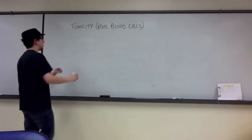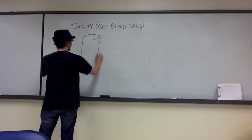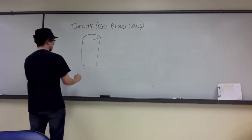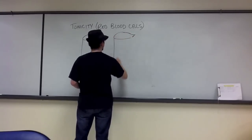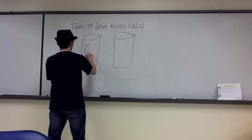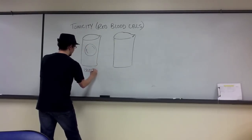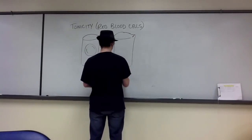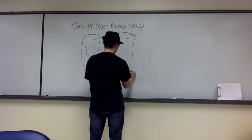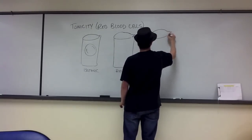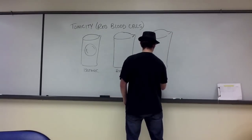What you did here was you took a test tube with red blood cells placed in one of three solutions. In one instance, the red blood cell was placed in an isotonic solution. In one instance, in a hypertonic solution. And in the final instance, in a hypotonic solution.